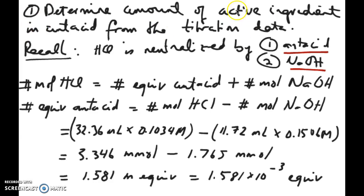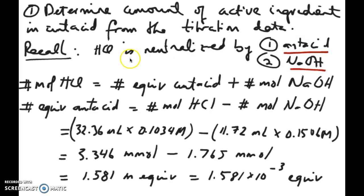Going back to this concept: we have two bases in this experiment. We have the bases coming from the antacid and then we have sodium hydroxide as our second base. We have one acid in the experiment — that acid HCl is neutralized by these two bases. What we're interested in is figuring out how much of the antacid base we have. We know how much HCl we have and how much NaOH we have. So the total HCl is equal to the sum of these two, meaning the antacid contribution is just HCl minus NaOH.